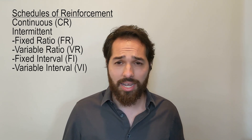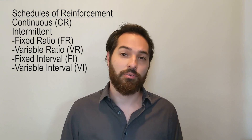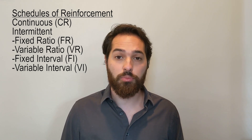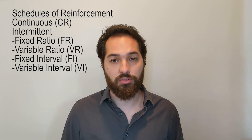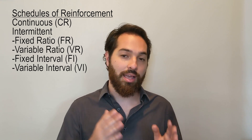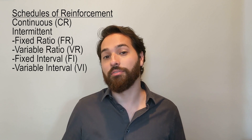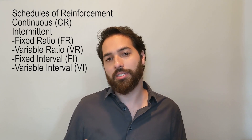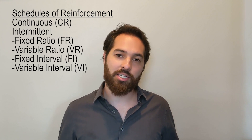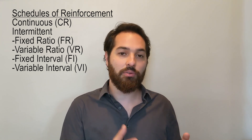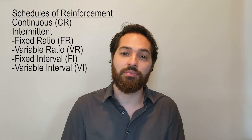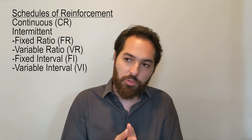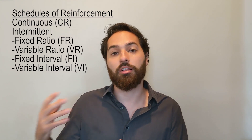For intermittent reinforcement there are four types: fixed ratio (FR), variable ratio (VR), fixed interval (FI), and variable interval (VI). Fixed means not changing; variable means it changes from time to time. Ratio means you need a certain number of responses to get a reinforcer. Interval means a certain amount of time has to pass before reinforcement is available again — it kind of has to charge up.